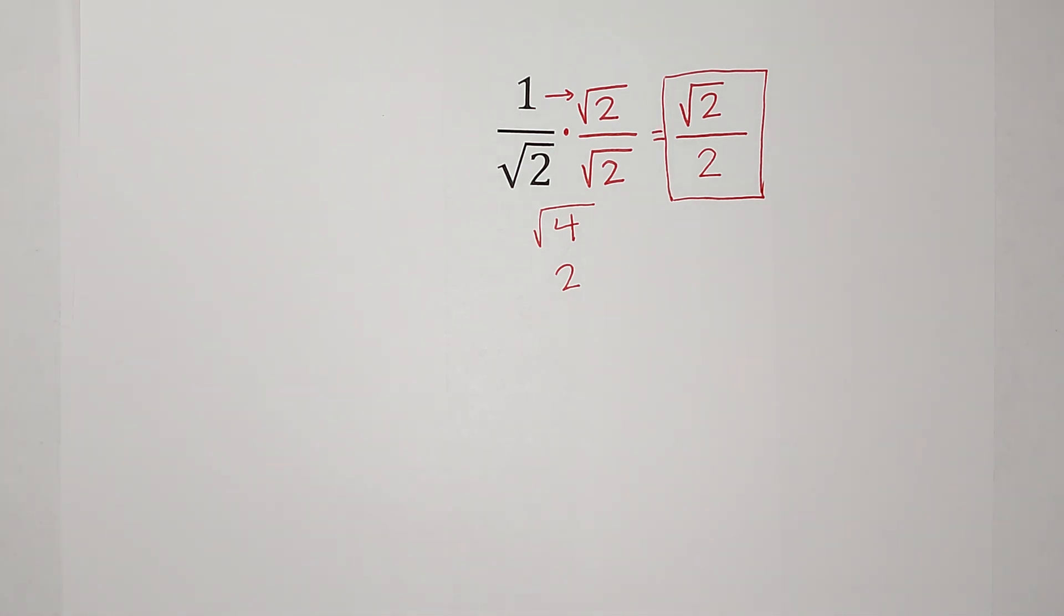So that is how you - we call it rationalizing the denominator, I believe, because we don't like square roots down there. Hopefully that makes sense. I will link a playlist with a ton of other radical videos if you need them. Thanks, bye!